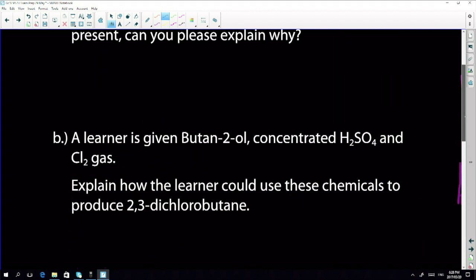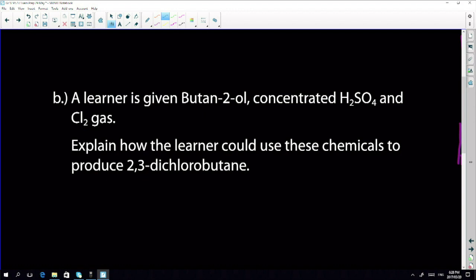Now a learner is given butan-2-ol, concentrated sulfuric acid, and Cl2 gas. Explain how the learner could use these chemicals to produce 2,3-dichlorobutane.